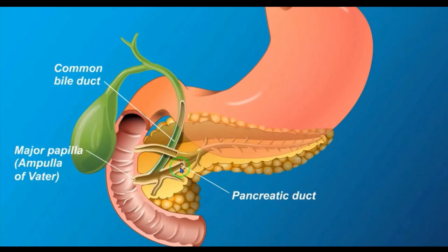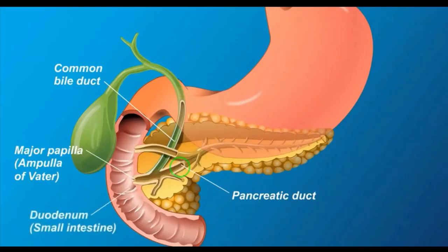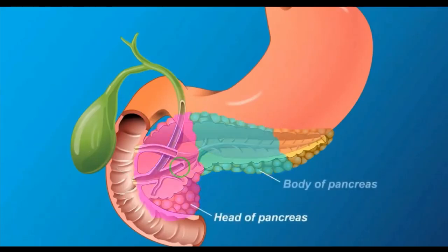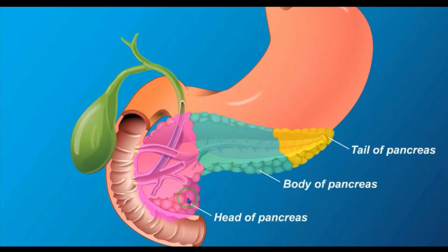The pancreas has 3 regions: the head of pancreas, body of pancreas and tail of pancreas. The first one is the head, the middle region is the body, and the last one is the tail of pancreas.